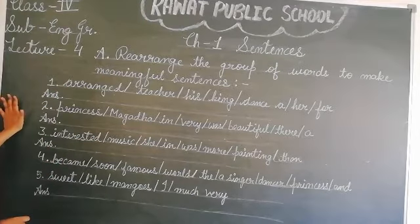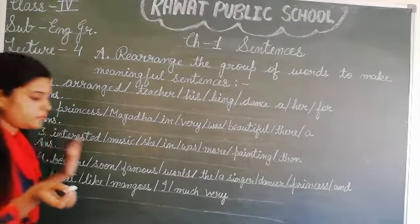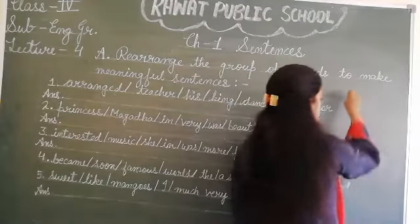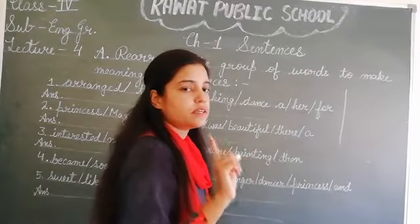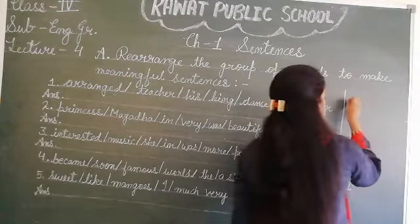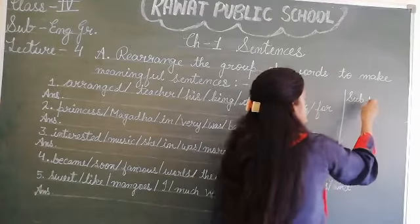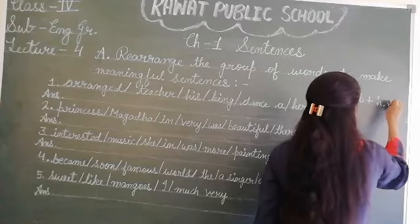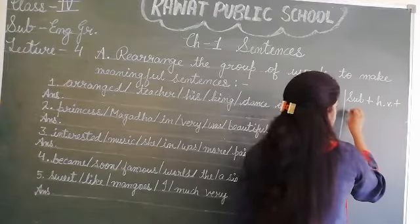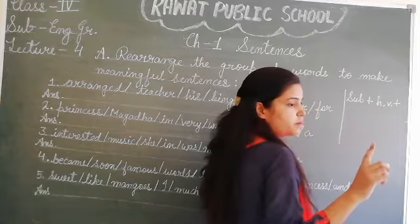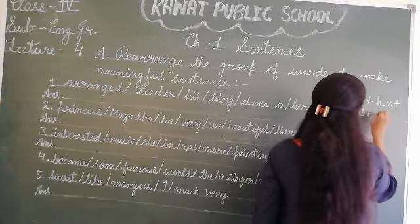So we arrange this question. As I told you at the starting, कि कोई भी sentence होता है — a perfect correct sentence तब होता है जब वो subject से complete हो: Subject, then helping verb, then verb, and last is object.